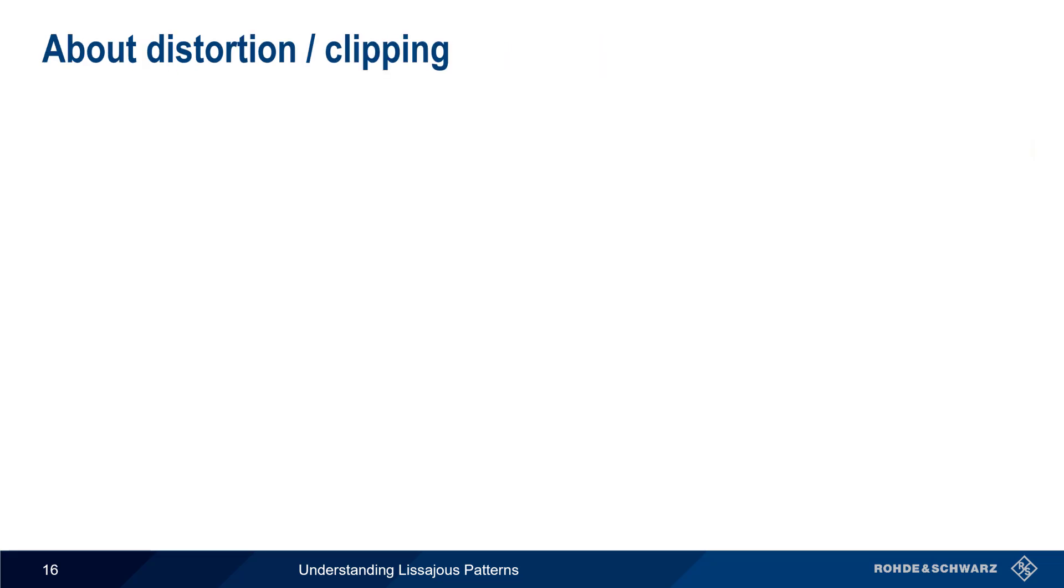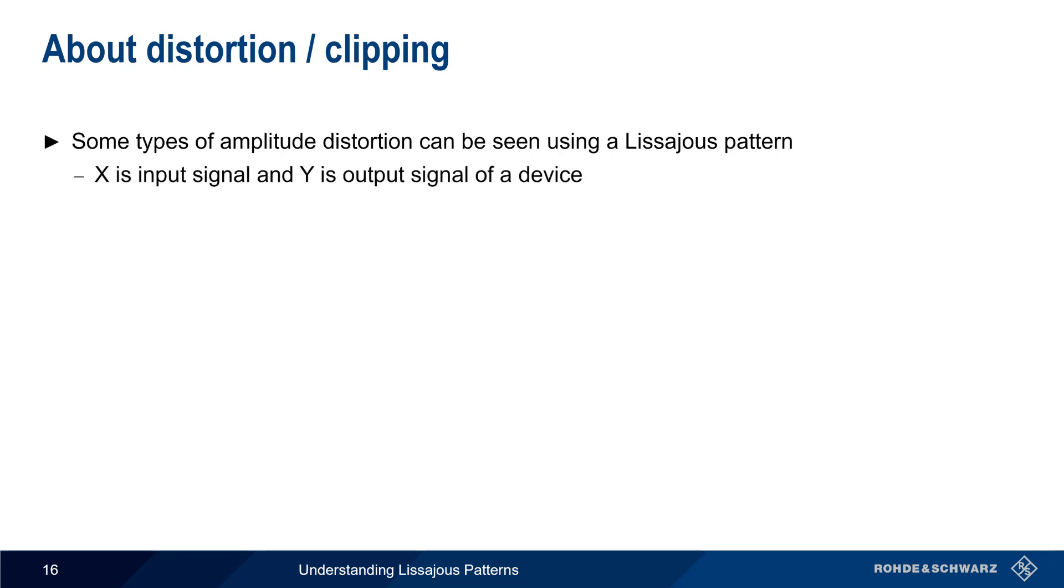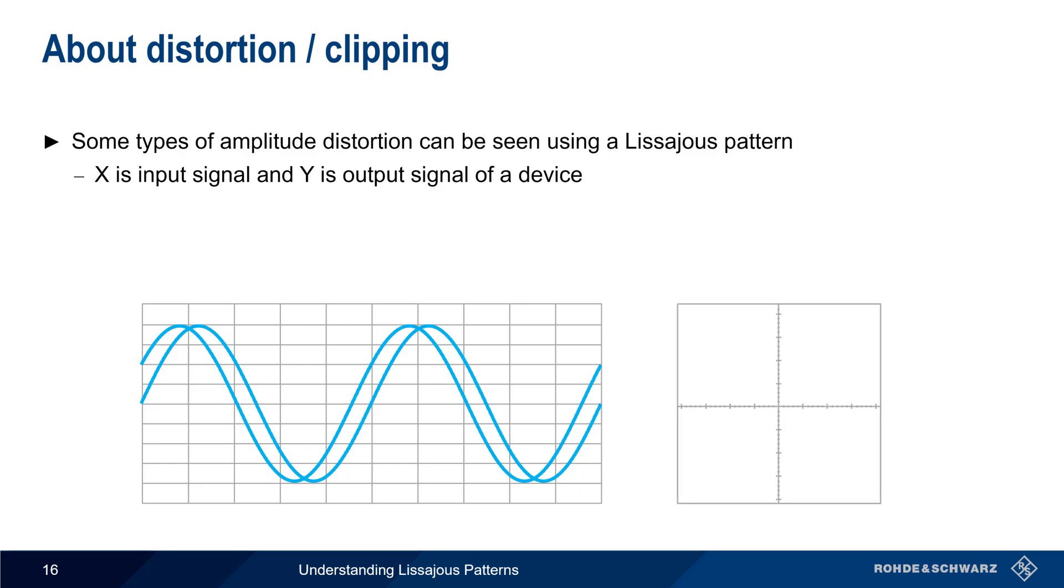Lissajous patterns can also be helpful in detecting certain types of amplitude distortion. This can be done by assigning X to a device's input signal, and Y to a device's output signal. In this example, the output signal has the same amplitude and frequency as the input signal, but is slightly shifted in phase.